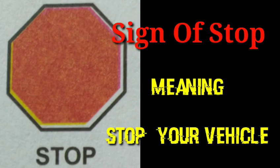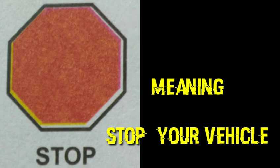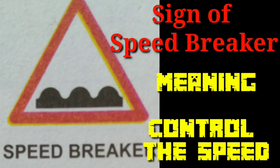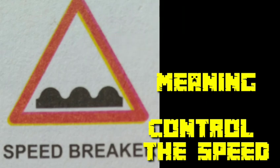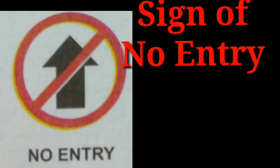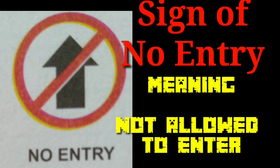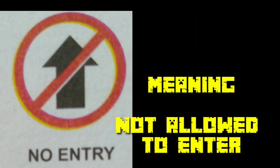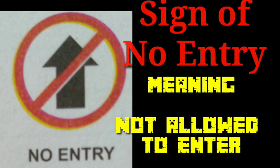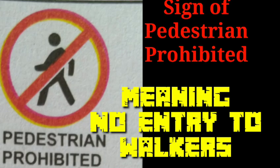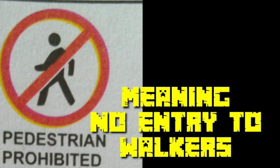Sign of stop — meaning: stop your vehicle. Sign of speed breaker — meaning: control speed. Sign of no entry — meaning: not allowed to enter. Sign of pedestrian prohibited — meaning: no entry to walkers.